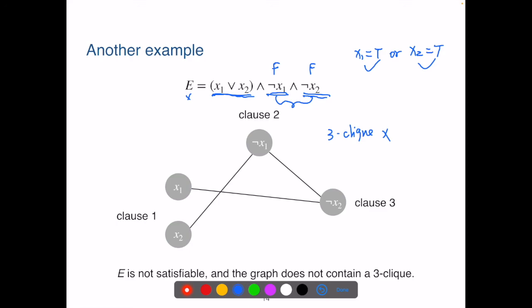By using such a polynomial time transformation, we have proved that CNF SAT reduces to k-Clique, and thus k-Clique is also NP-complete.